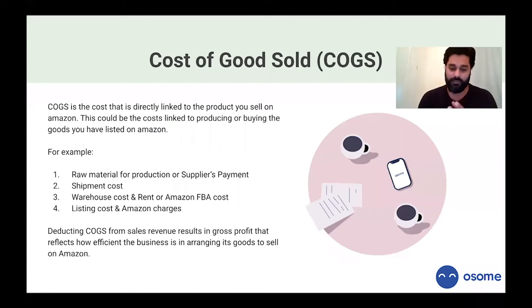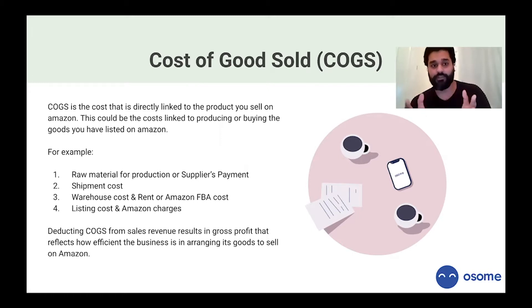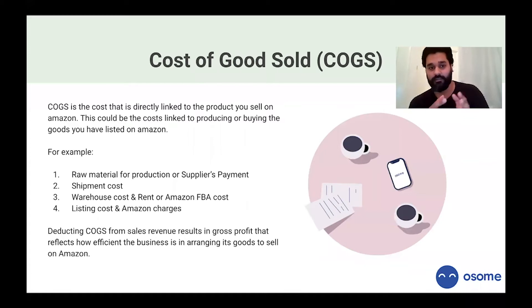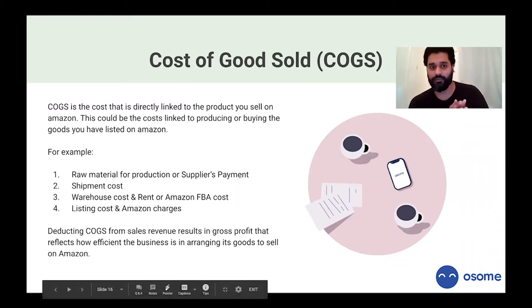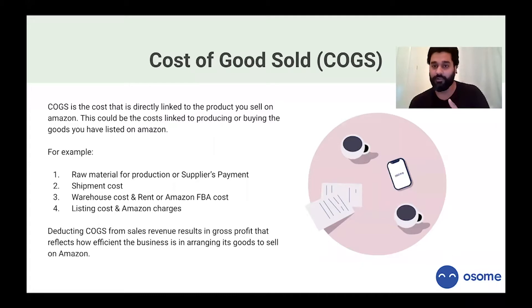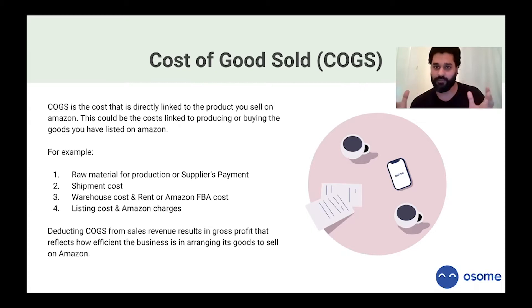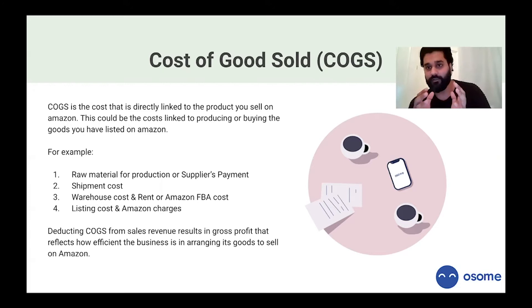Cost of goods sold is any cost that is directly linked to your product. For Amazon, that includes raw materials if you're producing the item yourself, but mainly we are purchasing items from different countries, so it's primarily the supply payment and any shipment costs. That also includes warehouse rent, and if you're using FBA, all the FBA charges and costs become your cost of goods sold, as do listing and Amazon charges.